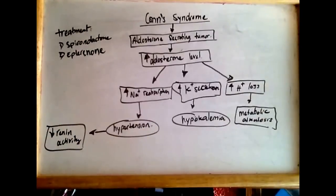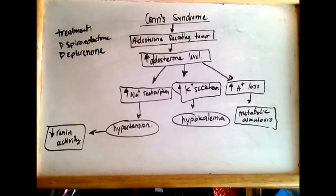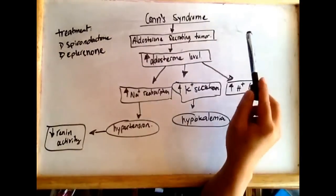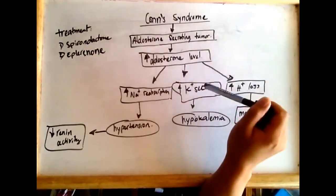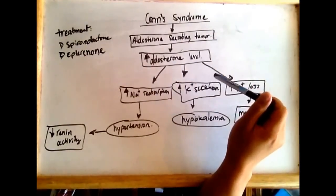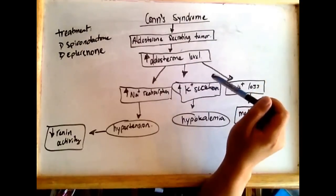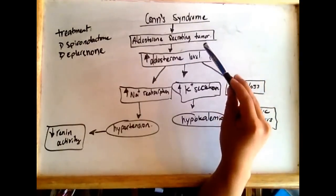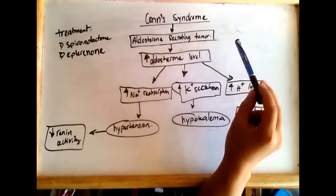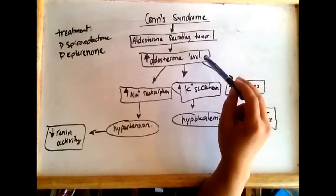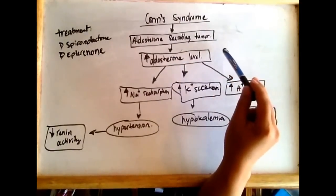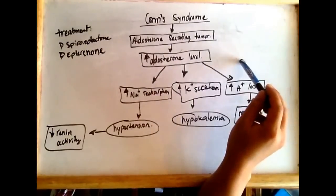Conn's Syndrome is an aldosterone-secreting tumor. The location of it is in the adrenocortex, specifically the zona glomerulosa. The tumor increases the production and secretion of aldosterone.